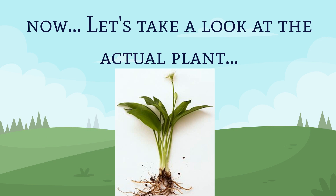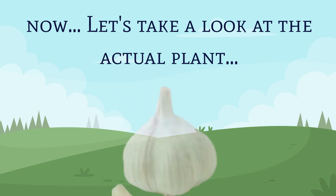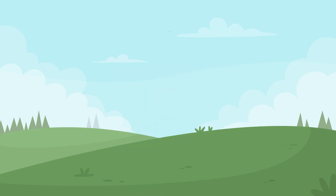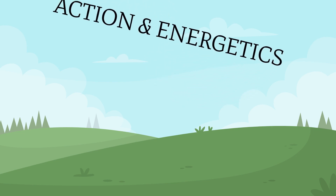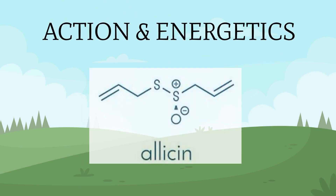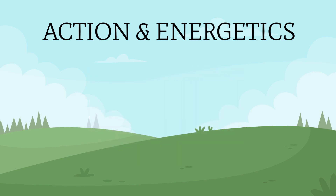So, what part of the plant is medicinal? The bulb or root of the garlic plant. Garlic has one main constituent, which is the antioxidant allicin. We will discuss this antioxidant in depth as we discuss the uses of garlic later in this video.